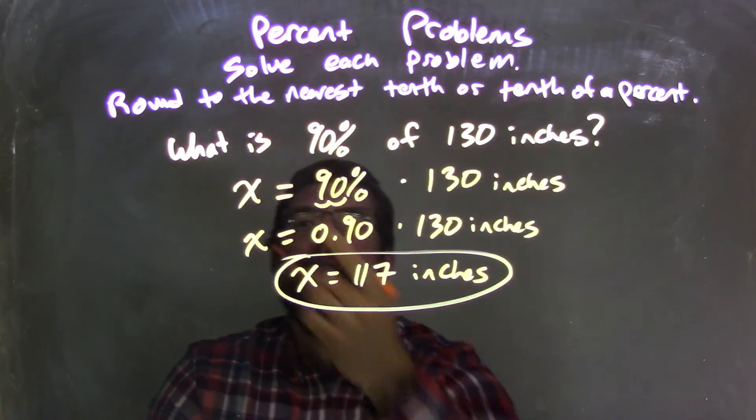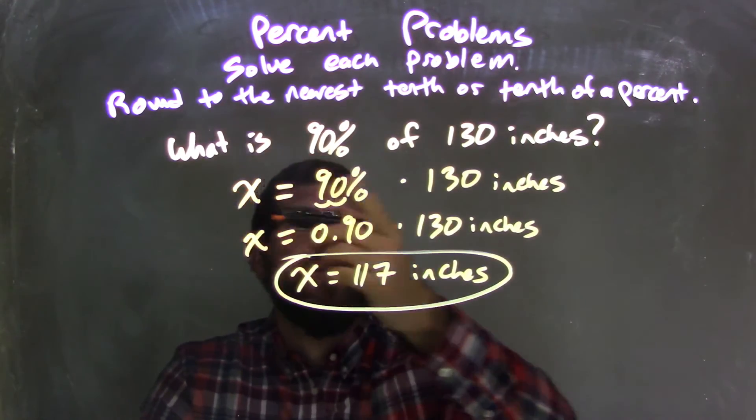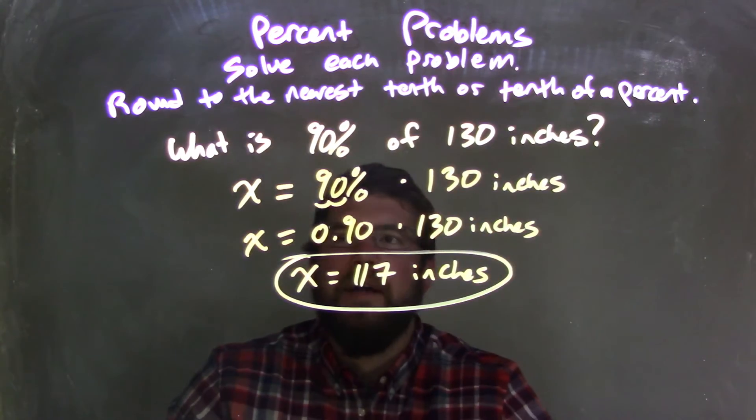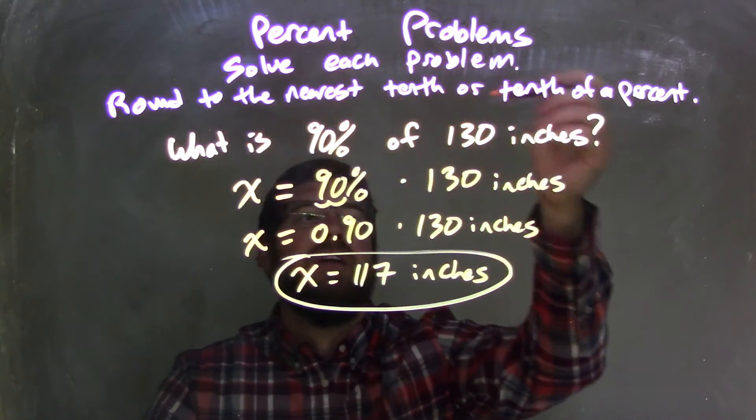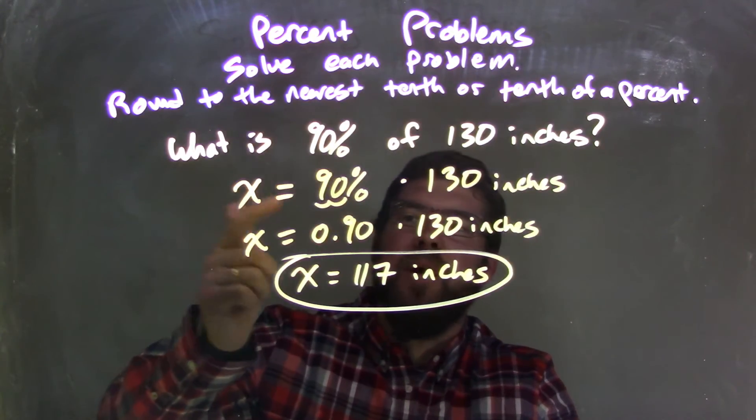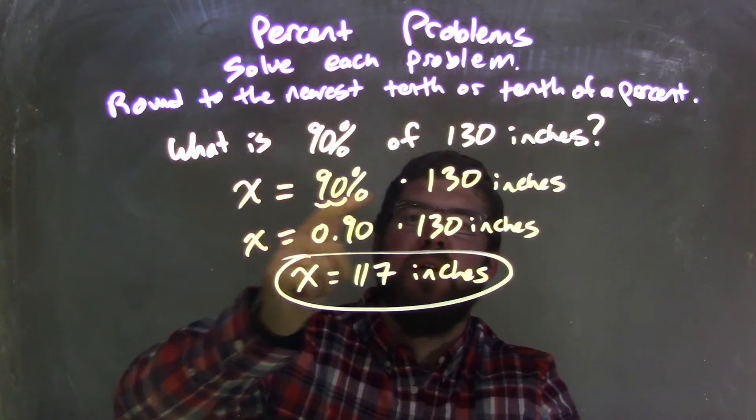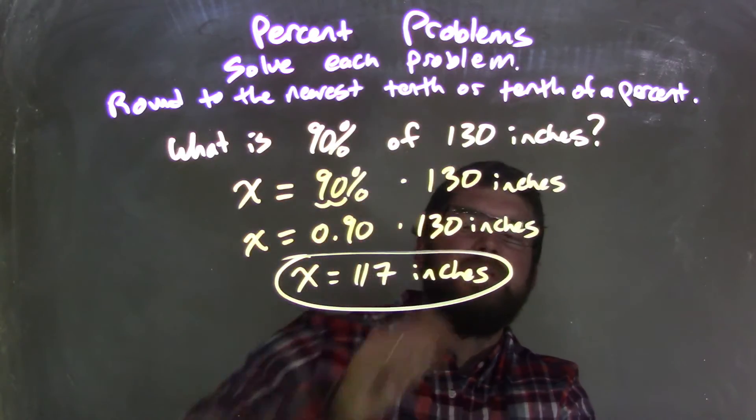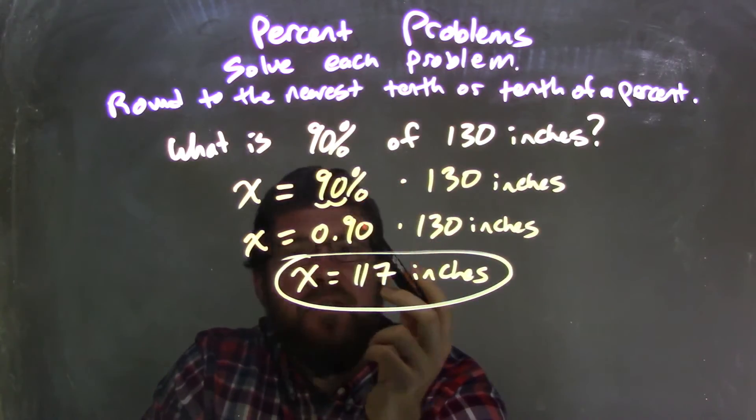So that answers our question: 117 inches is 90% of 130 inches. Let's recap. We're asked the question, what is 90% of 130 inches? I wrote that as an equation. X, which is my 'what', equals 90% of, or multiplication by, 130 inches. I then converted the percent to the decimal.